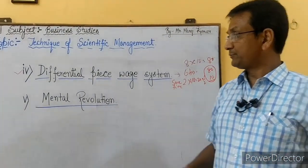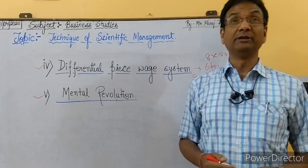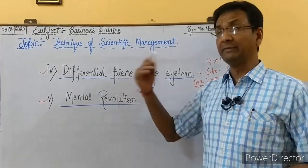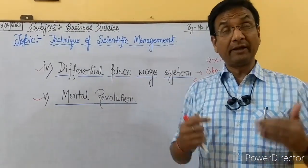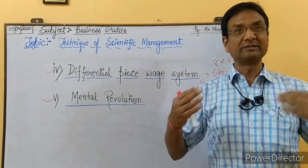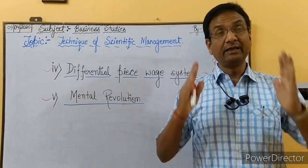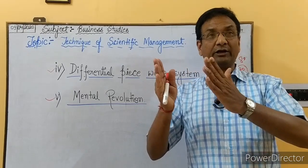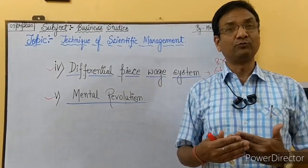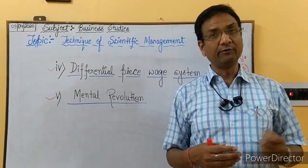The fifth technique is mental revolution. This is similar to the principle of harmony not discord mentioned earlier. Mental revolution means changing our thinking and attitude. Workers often develop the attitude that their employer is exploiting them, making them work too hard and paying too little. This thinking and attitude needs to change. Taylor said it is necessary that workers participate in management.